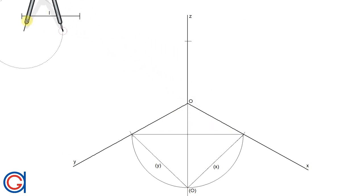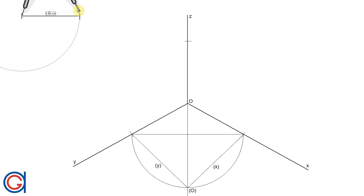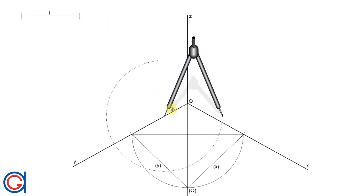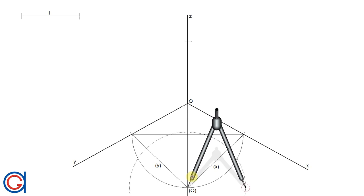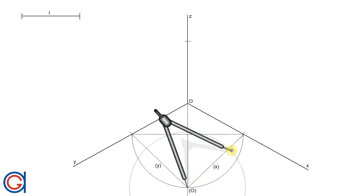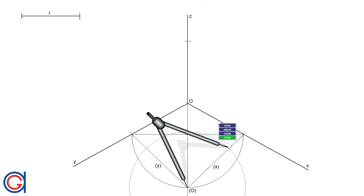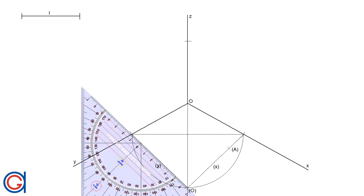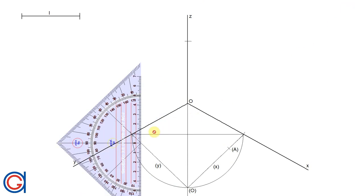Now setting the compass to the given length L, we are going to transport it onto the X in brackets axis by setting the compass on the O in brackets origin. We transport this onto the X in brackets axis as can be seen here, and we will get a new point which we will call A in brackets.